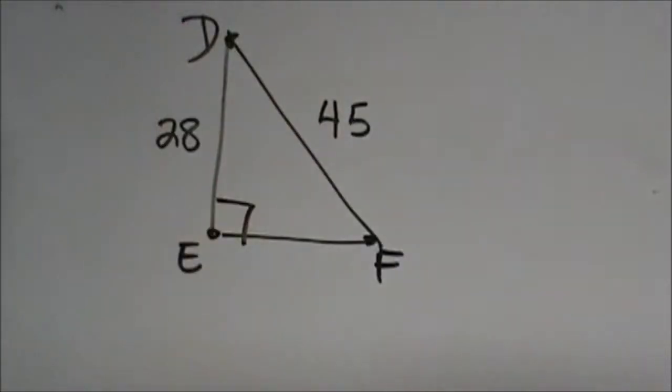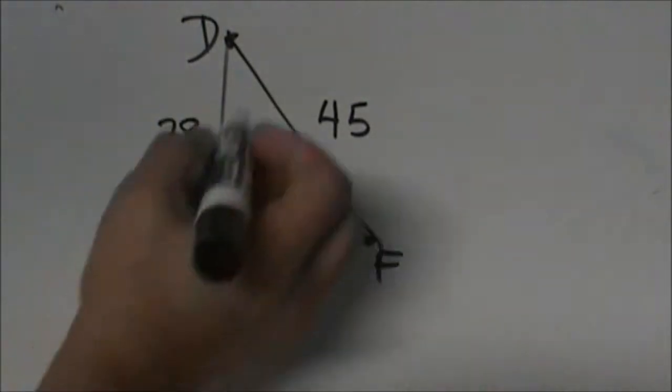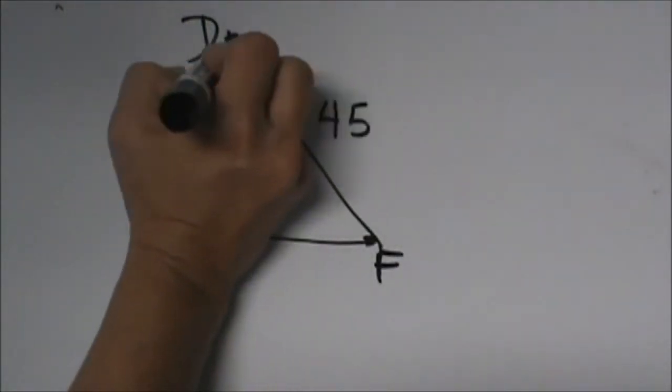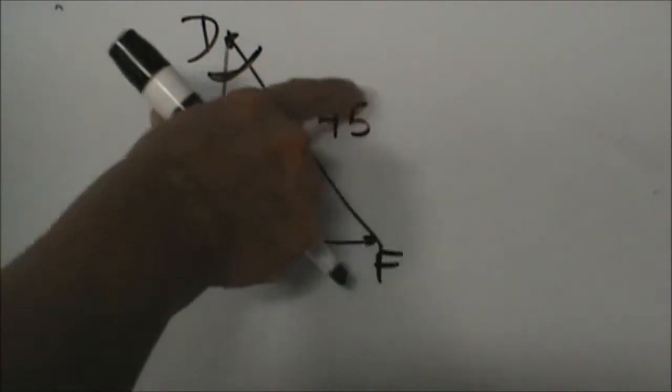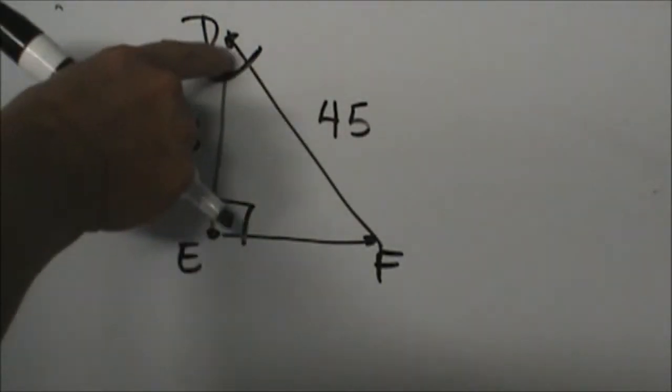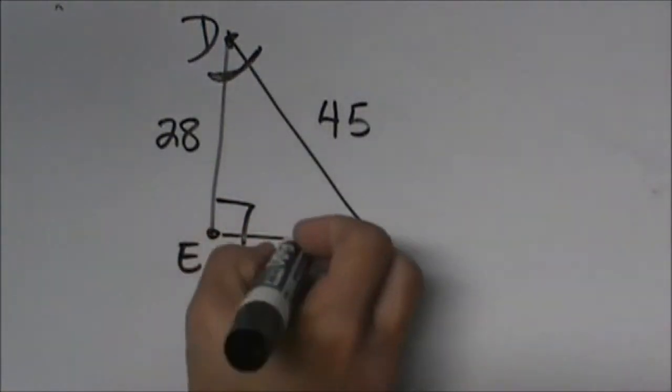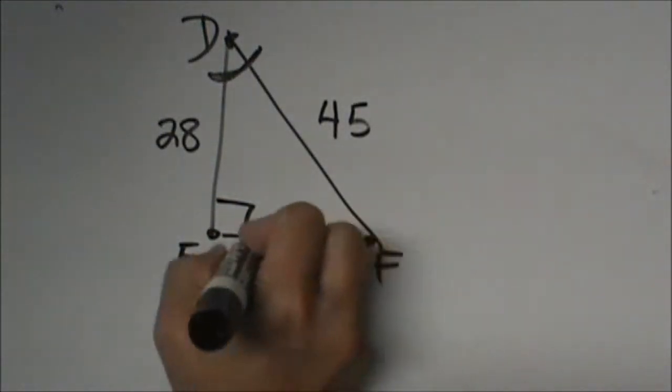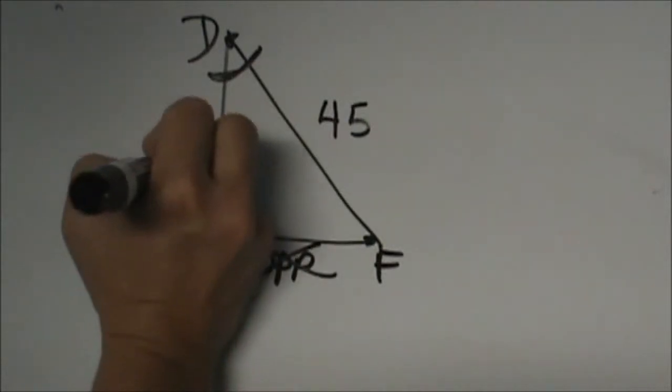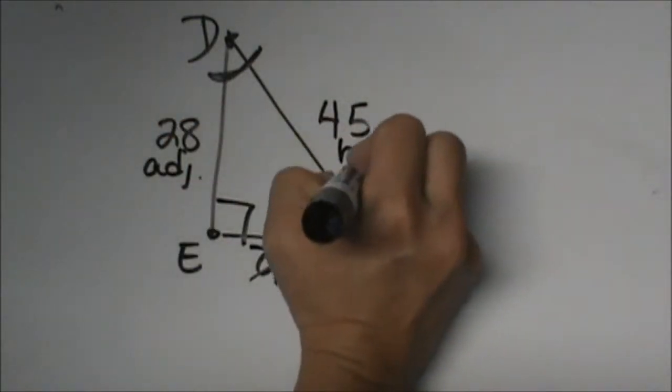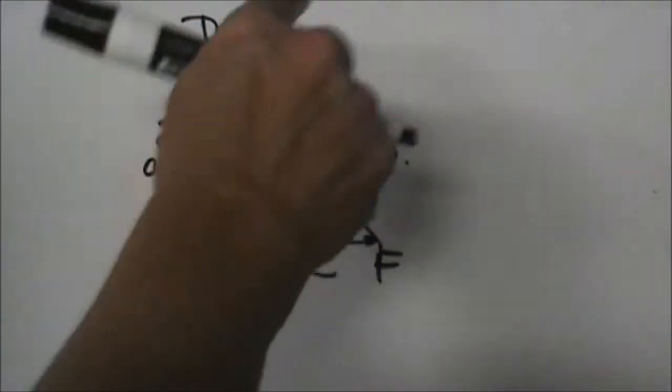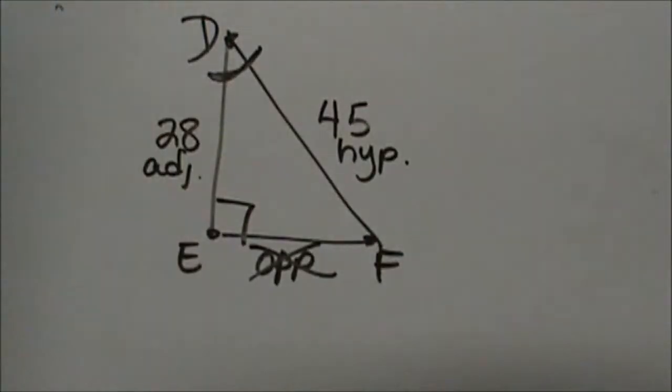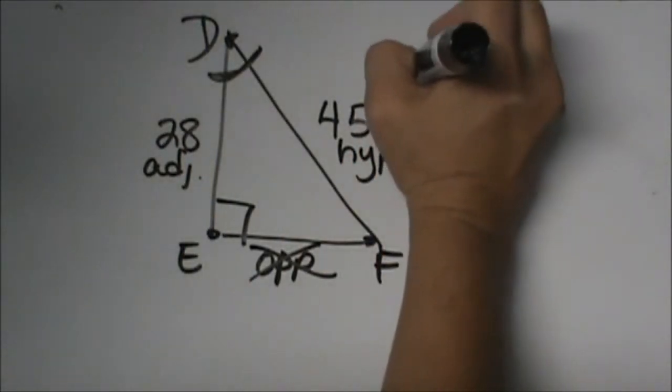So what we need to do first is decide which is our unknown angle. Well, D is where we're working from. So from this reference angle, which two sides do we have? Well, this side over here is our opposite, and we're not using it. We have the adjacent and we have the hypotenuse. So which trig function uses adjacent and hypotenuse? Cosine. So we're going to use the cosine function.